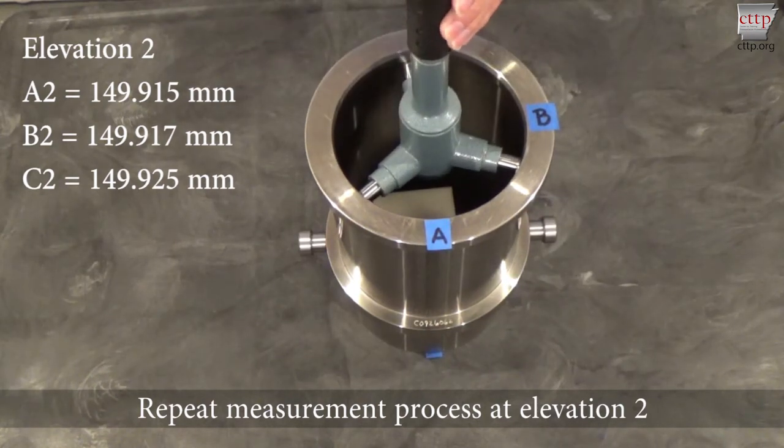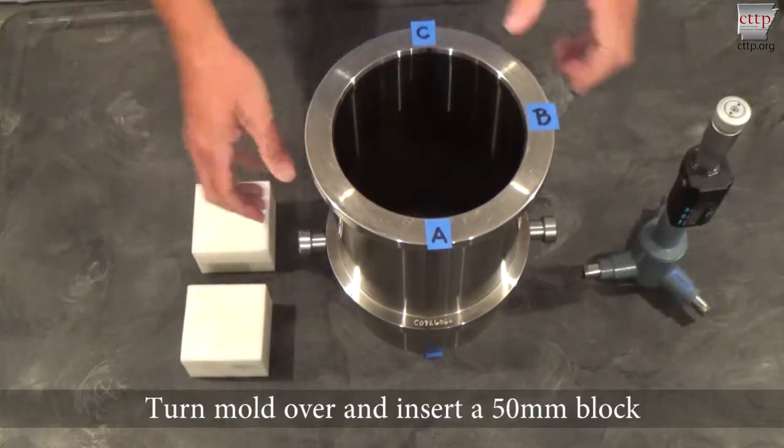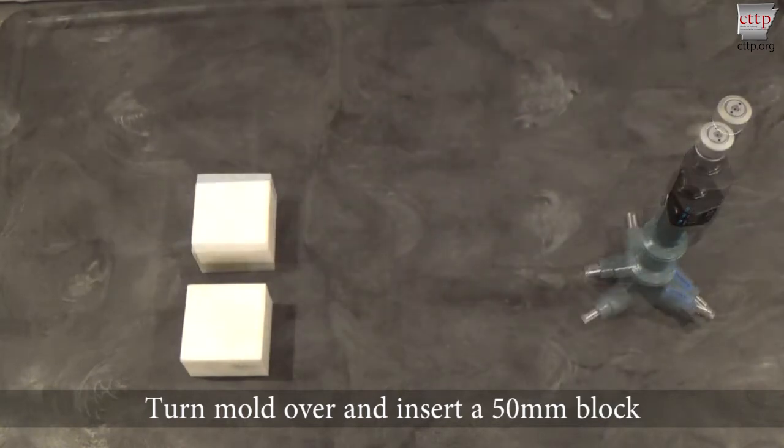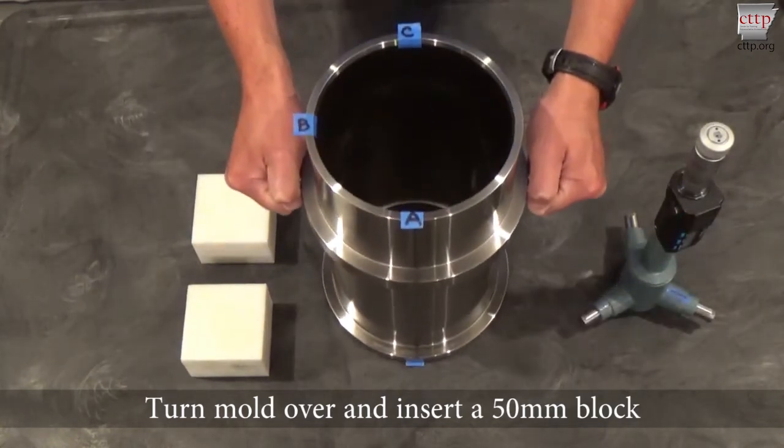Loosen and remove the bore gauge from the mold. Turn the mold over and insert a 50 millimeter block. This is elevation 3.